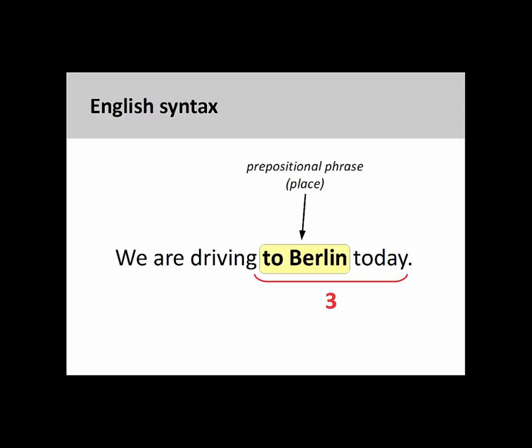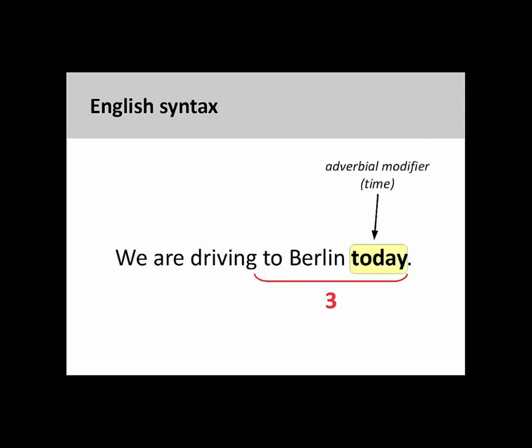Additional information is usually presented as prepositional phrases or adverbial modifiers after the verb in a third position. Here the prepositional phrase 'to Berlin' describes the place to where the subject is driving. Also in the third position is the adverbial modifier describing the time when this activity will take place.